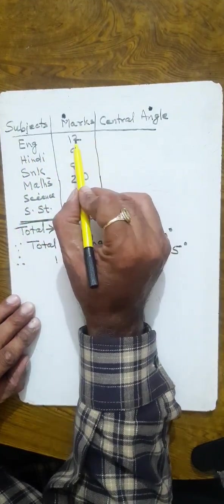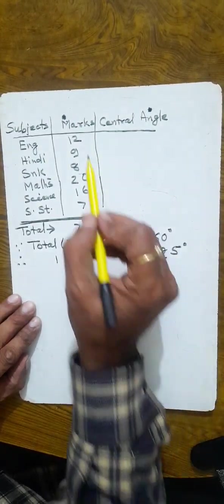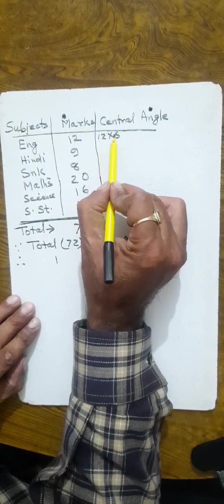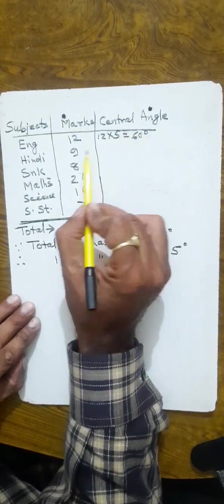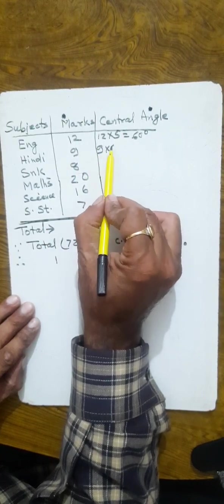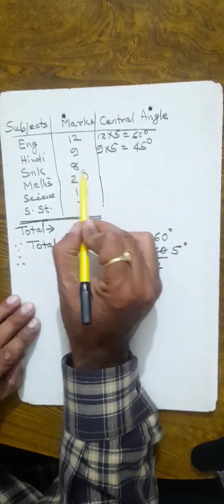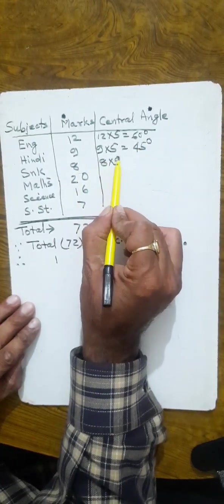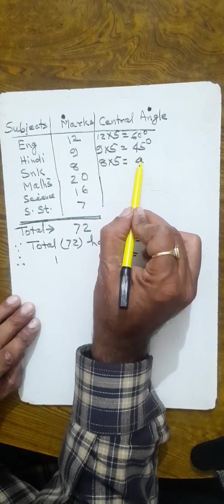Now we calculate the central angle for each subject. English has 12 marks, so 12 into 5 equals 60 degrees. Hindi has 9 marks, so 9 into 5 equals 45 degrees. Sanskrit has 8 marks, so 8 into 5 equals 40 degrees.